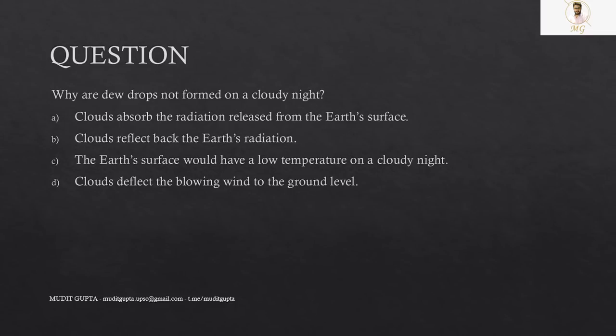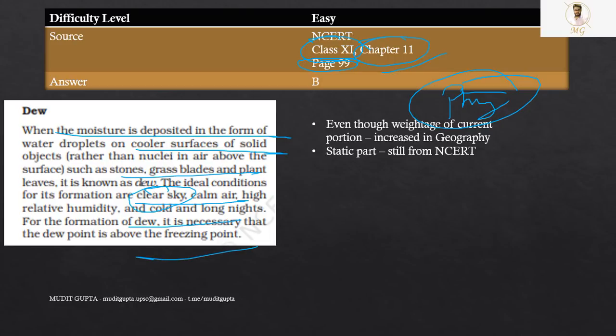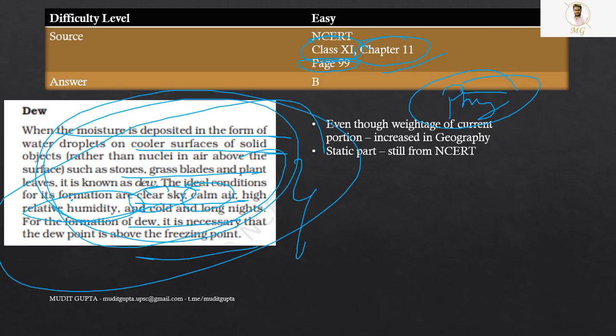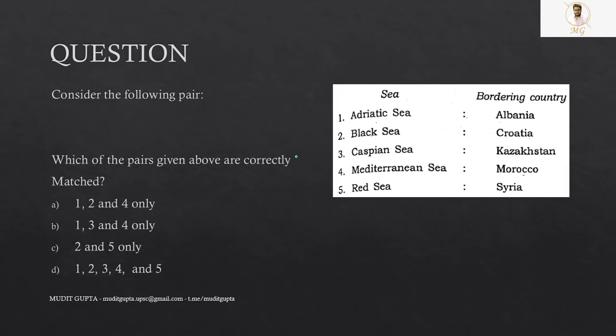Why are dewdrops not formed on a cloudy night? Again, a very very easy question directly from NCERT. Cloudy night and dew. Page number 99, Class 11th NCERT, Chapter 11. Physical geography of NCERT. Physical geography is directly mentioned here. Clear sky, calm air, high relative humidity and all. So it is categorically directly mentioned in this particular article of the book.